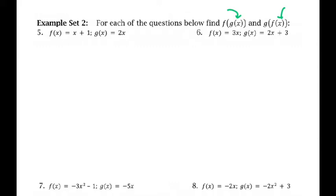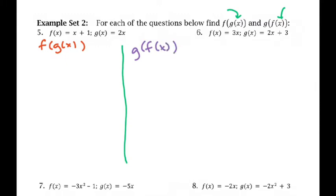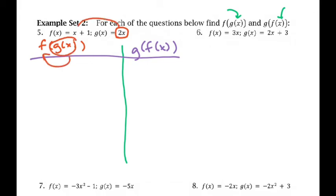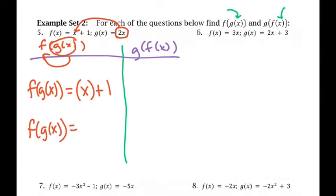Now the way that you do this, you've got to be really careful that you pay attention to what you're doing. I'm going to make two workspaces: for f of g of x I'll do it in red, and for g of f of x I'm going to do it in purple. I want you to notice how they're different. So for f of g of x, I'm going to take my g of x and put it into f — in place of x in my f function. So f of g of x is equal to x plus 1.